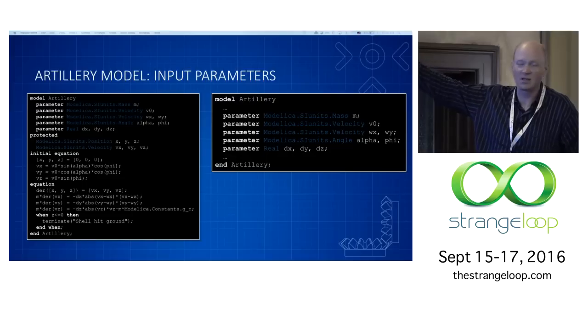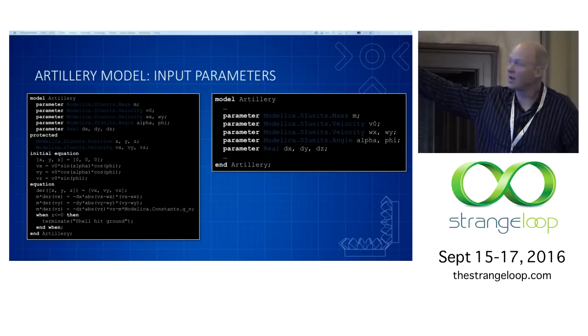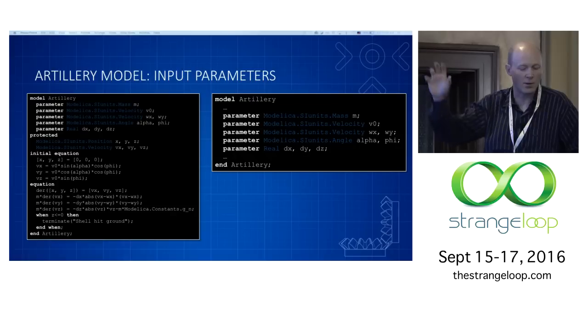This has a bunch of parameters. These are the knobs you can turn in building this model. There's a mass, there's a velocity, there's a wind direction, there's the firing angles, the drag coefficients. These are the things that we can sort of play around with. They're often the columns in the table.